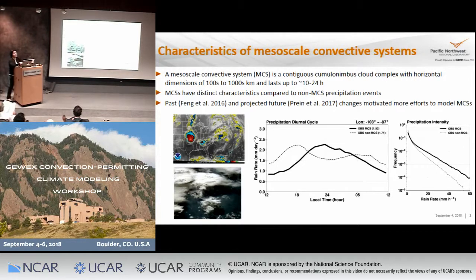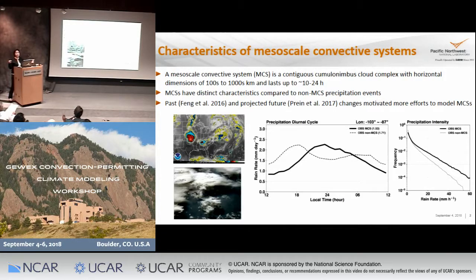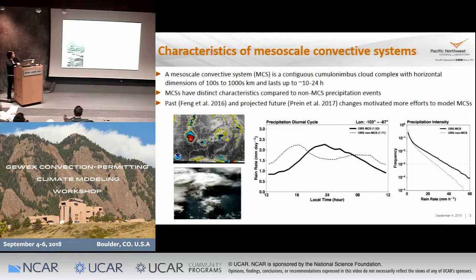The reason why we care about MCSs is partly because they are indeed different from other types of convection. If we take a look at this picture, we are separating precipitation coming from MCSs by using a tracking method. We have a tool called FlexTracker which we use to do that. Here, we are looking at over the central United States, looking at the diurnal timing of precipitation. You can see that for MCS precipitation, they typically maximize around midnight,